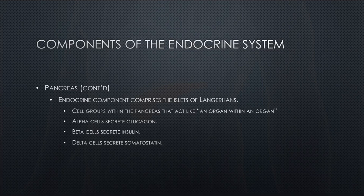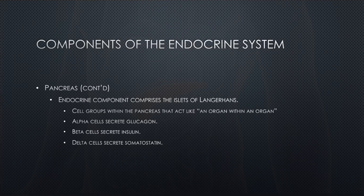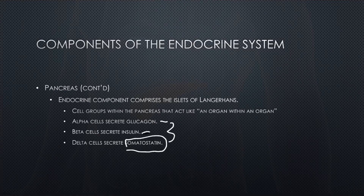The endocrine component of the pancreas comprises the islets of Langerhans — cell groups within the pancreas that act like an organ within an organ. It has alpha cells, beta cells, and delta cells. Alpha cells secrete glucagon, which helps with glycolysis. Beta cells secrete insulin, also required for the breakdown of glucose. Delta cells secrete somatostatin, which inhibits growth hormone secretion from the pituitary and, within the pancreas, inhibits secretion of other pancreatic hormones like insulin and glucagon — creating a homeostatic balance between the three.